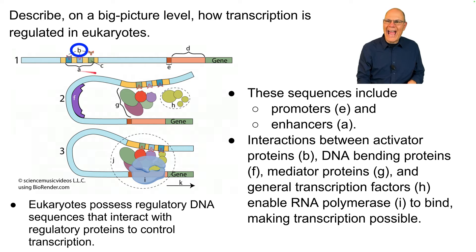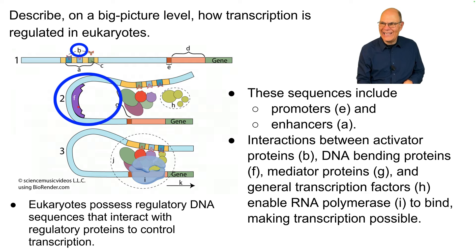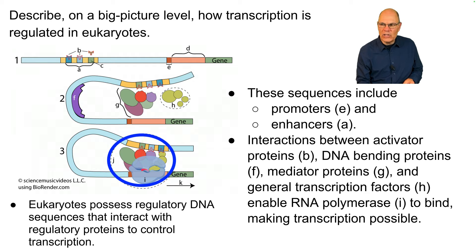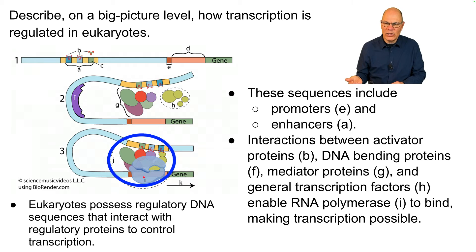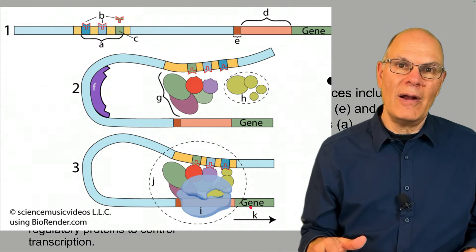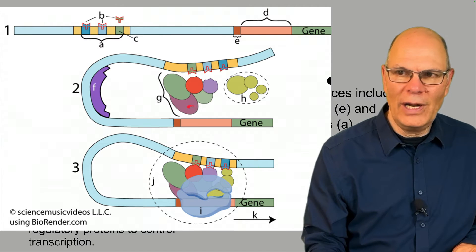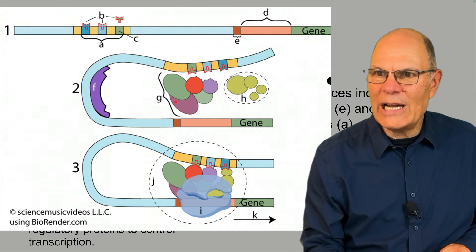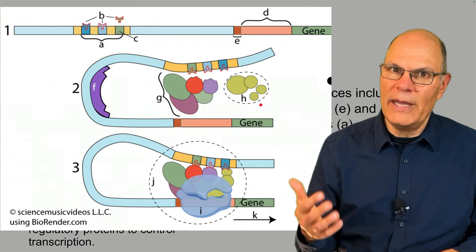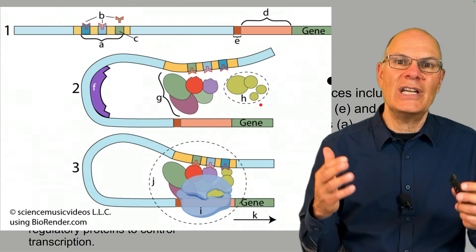Interactions between activator proteins (shown at B), DNA bending proteins (F), mediator proteins (G), and general transcription factors (H) enable RNA polymerase (shown at letter I) to bind. All you really need to know is that this kind of system is used for eukaryotic gene regulation. You'd never be asked to differentiate between mediator proteins and general transcription factors — just understand the big picture of what eukaryotic gene regulation can look like.